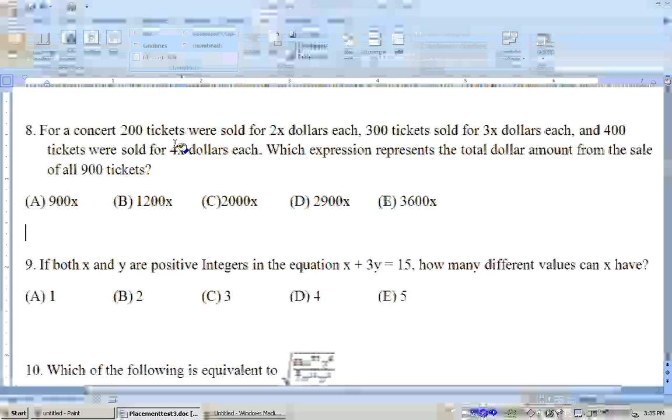Let's say it was 200 tickets for 2 dollars each, then the total amount from this would be 200 times 2 dollars, which is 400 dollars. 200 tickets at 2 dollars each would be 400 dollars, and you would continue on.